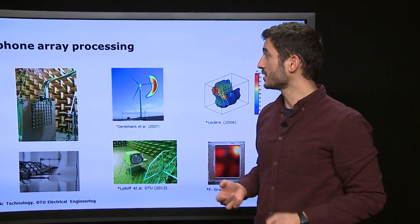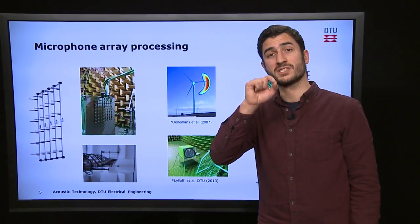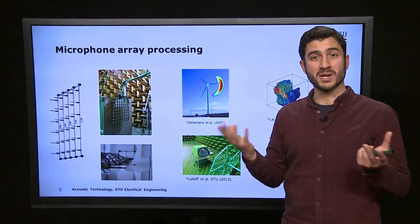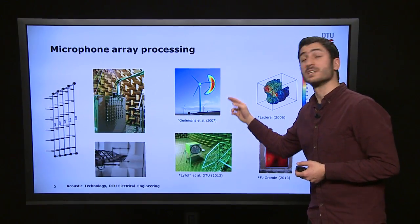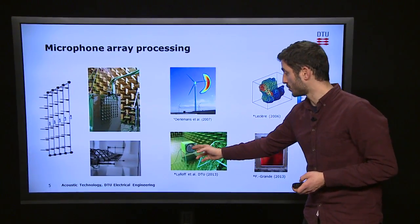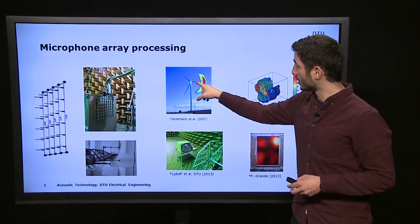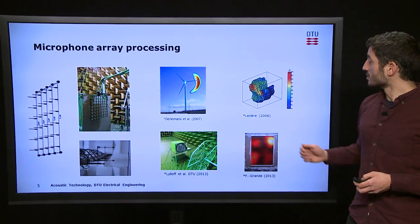There are other alternatives such as microphone array measurements, in which we measure the sound pressure at multiple points in order to determine its spatial properties. This makes it possible for instance to localize sound sources, such as in this wind turbine noise problem or a rotating fan, in which by means of beamforming we can point out what are the regions generating the noise.